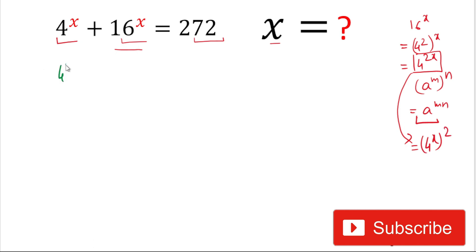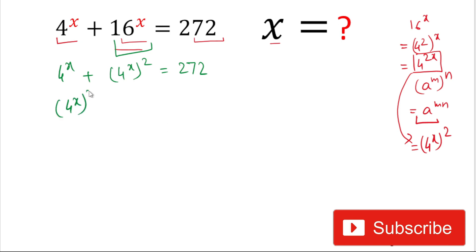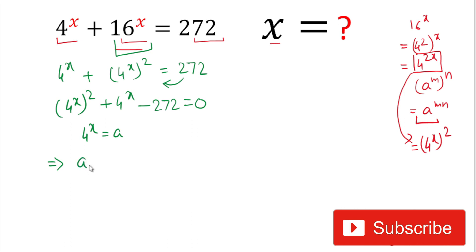Now we can write the full equation: 4 powered by x plus 16 powered by x, which we now write as 4 powered by x squared, equals 272. Rearranging, it becomes 4 powered by x squared plus 4 powered by x minus 272 equals 0. For simplicity, we let 4 powered by x equal to a, so we can write a squared plus a minus 272 equals 0.